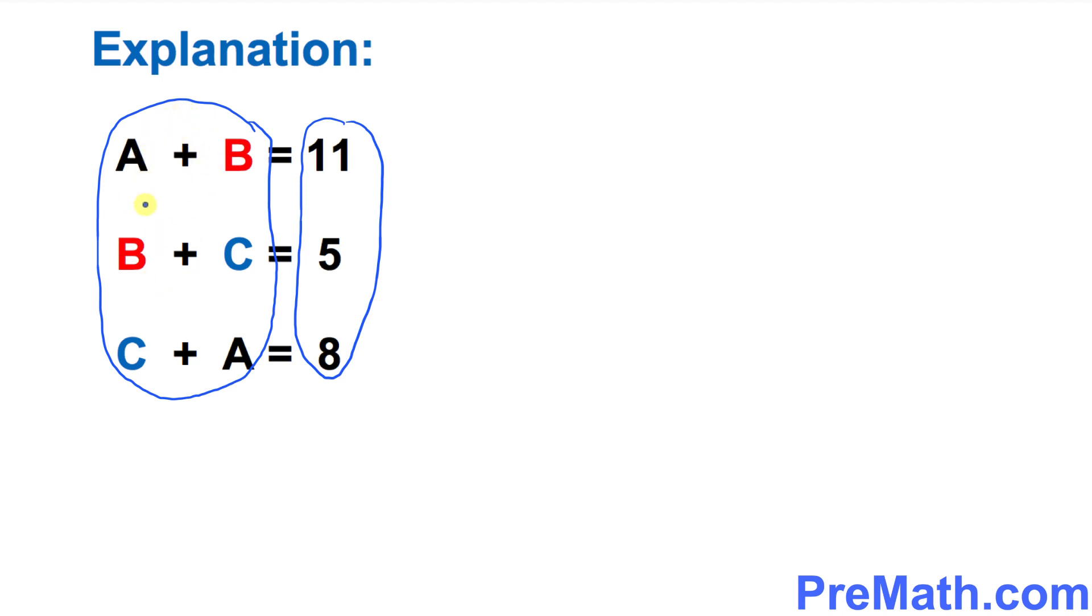If you add all these, how many a's are there? a plus a equals 2a. And then how many b's? Plus 2b. And then how many c's if you add them? Plus 2c.